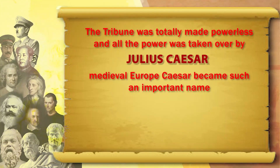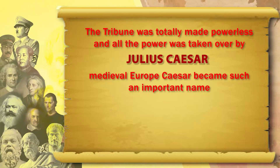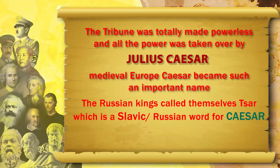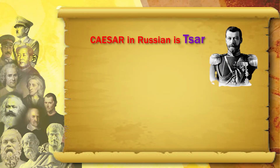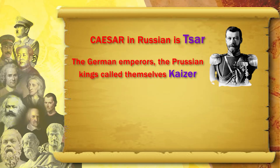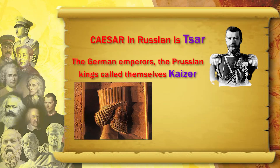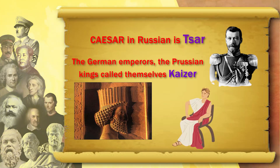In medieval Europe, Caesar became such an important name that the Russian kings called themselves Tsar — a Slavic word for Caesar. The German emperors and Prussian kings called themselves Kaiser — Kaiser in German is Caesar. So Caesar becomes a very important word and idea: the idea of the absolute king, a very important legacy carried into modern European political thought.